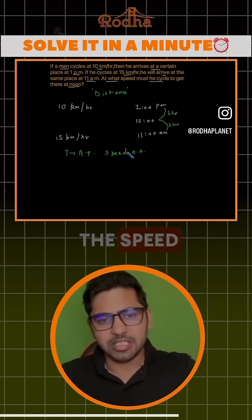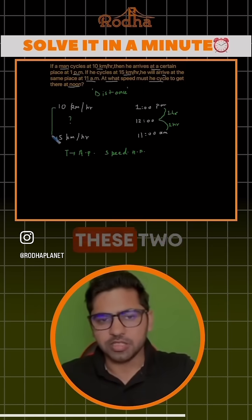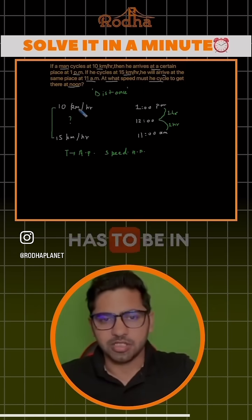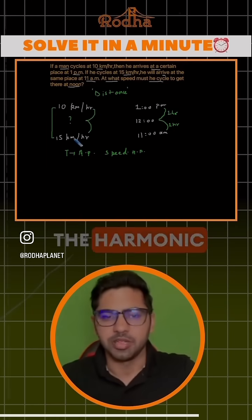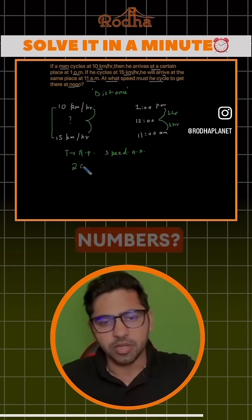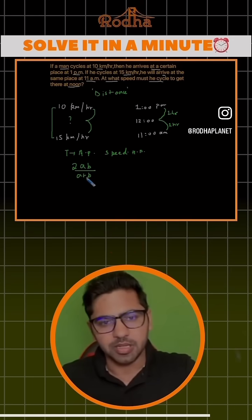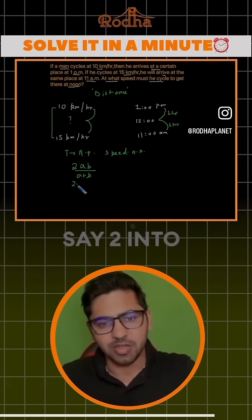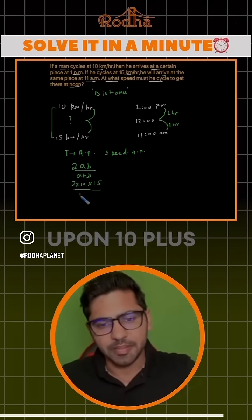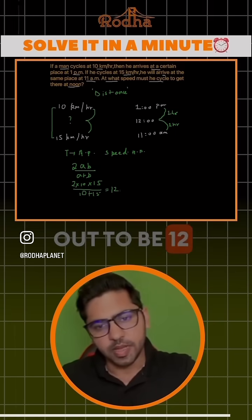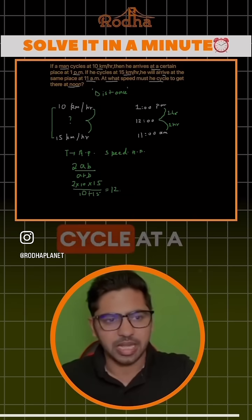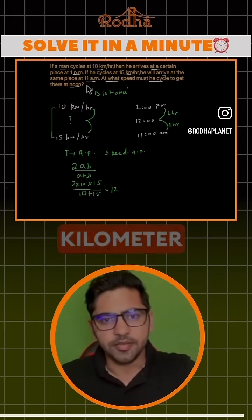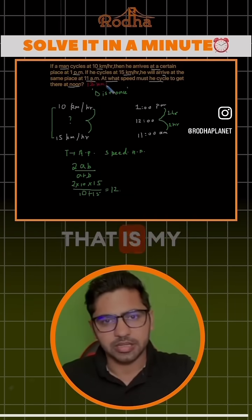So the speed here will be the harmonic mean of the two given speeds. The speed has to be in HP, so this speed is the harmonic mean. The harmonic mean of two numbers is 2ab upon a plus b. So the speed here would be 2 × 10 × 15 upon 10 + 15, which comes out to be 12 kilometers per hour. So the answer is he must cycle at a speed of 12 kilometers per hour.